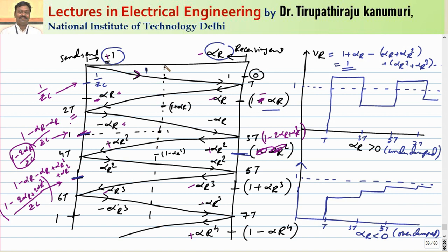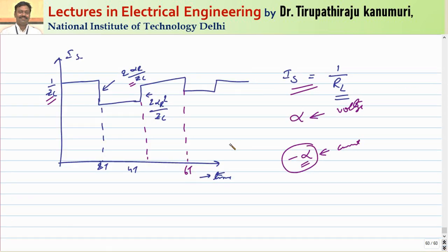For example, if you want to find the current at instant 3t at some intermediate location, take the sum of values up to that position in the current lattice: 1 − αr − αr = (1 − 2αr)/Zc. This is the current value at that location at time 3t. Likewise, we can calculate voltage or current at any location in the transmission line easily. I hope the Bewley lattice diagram concept and how to calculate voltage or current at any instant is clear. If you have any queries, leave your comments below. Thank you very much.